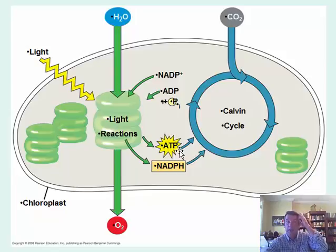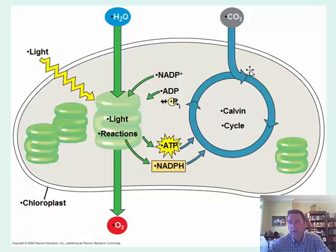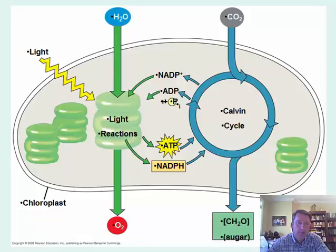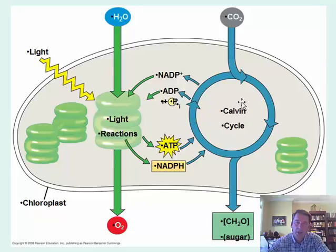The next set of reactions is called the Calvin cycle, and it uses the ATP and the electron carrier from the light reactions. The ATP comes in and a series of reactions convert carbon from carbon dioxide into our sugar. For every one carbon, we have two hydrogens and one oxygen given off — that's our sugar. Those are the two broad steps: the light reactions and the Calvin cycle, also called light-independent reactions or dark reactions.